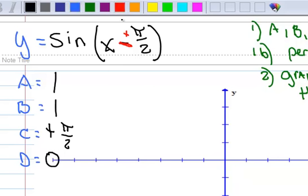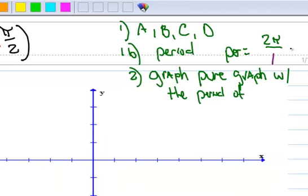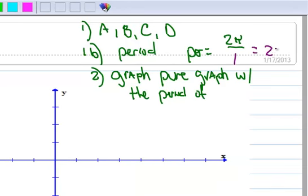The next step is to calculate the period. B is 1, so 2 pi divided by 1 is 2 pi. The next step is to graph the pure graph equation with the period of 2 pi, and this is the sine curve.